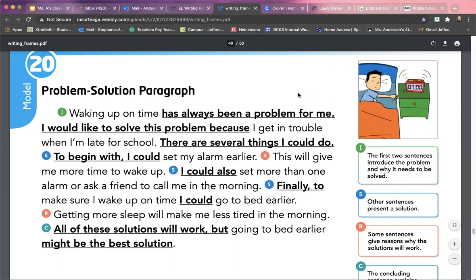Waking up on time has always been a problem for me. I would like to solve this problem because I get in trouble when I'm late for school. There are several things I could do. To begin with, I could set my alarm earlier. This will give me more time to wake up. I could also set more than one alarm or ask a friend to call me in the morning. Finally, to make sure I wake up on time, I could go to bed earlier. Getting more sleep will make me less tired in the morning. All of these solutions will work, but going to bed earlier might be the best solution.